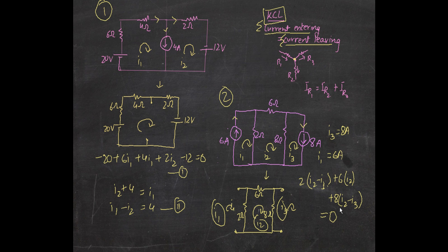That's about it for super mesh analysis. This was actually fairly easy — you just have to detect when to use super mesh analysis: when a current source is getting in the way of your mesh analysis technique. In mesh analysis we apply KVL, which requires voltage sources or resistors only. When a current source is bothering you, you remove it by opening the circuit, then apply the super mesh technique to get the answer. Please like and subscribe if you want more tutorials.